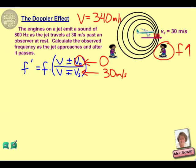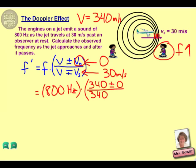So, if we look at the math behind this, we have 800 hertz for our original frequency. The top part of our equation is simply 340 for the velocity of sound, plus or minus zero, since our observer is not moving. On the bottom part of the equation, we again have 340 for the velocity of sound. In order for us to get a higher value than our original frequency, we need to subtract 30.